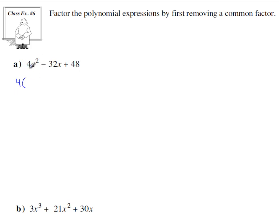To figure out what's inside the bracket, take each term in your original expression and divide by the common factor. So for example the first term would be 4x squared divided by 4. So 4 divided by 4, they cancel out and you just get x squared.